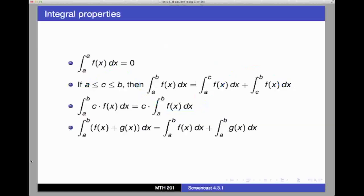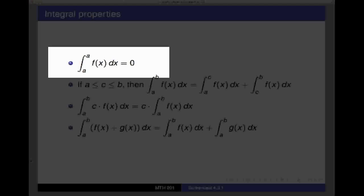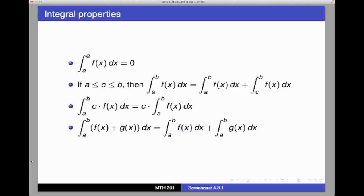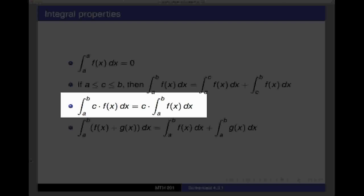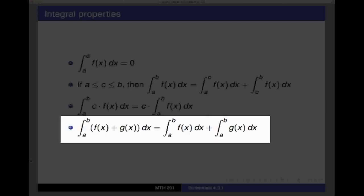Elsewhere in this section, we discuss some basic integral properties, such as the definite integral from a to itself is zero. A definite integral can be split up along the interval we are integrating over, and we have a constant multiple rule for definite integrals and a sum rule for integrals.